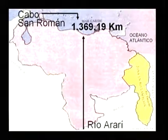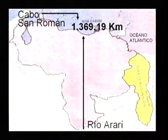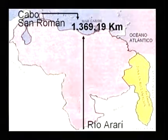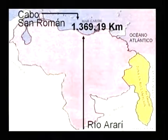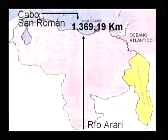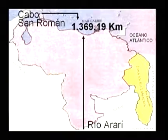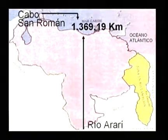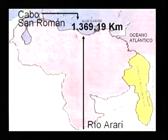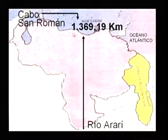Observemos entonces la parte más norte: nuestro extremo corresponde al Cabo San Román. Desde el Cabo San Román hasta el extremo más sur del río Ararí, vamos a tener una distancia de norte a sur de 1.369,19 kilómetros. Haz la anotación correspondiente en tu cuaderno de trabajo: Cabo San Román al norte, río Ararí al sur, y la distancia de 1.369,19 kilómetros.